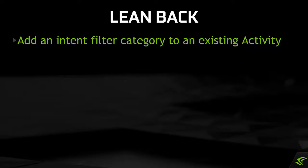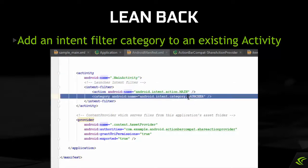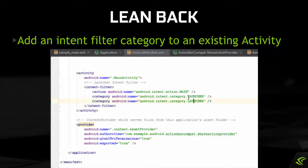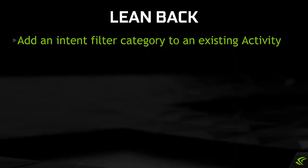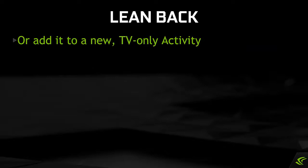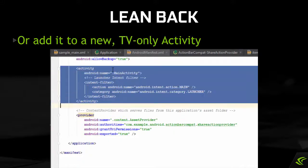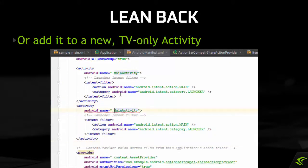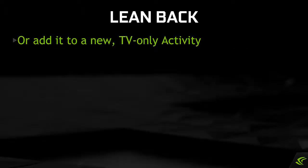The main modification required is to ensure that some activity in your app handles the Leanback Launcher intent. This can be done in one of two ways: either by adding an intent filter to handle that intent in an existing activity — likely the same one that handles the tablet and phone launcher intent you already have — or by creating a new TV-specific activity that handles the Leanback Launcher intent only. While more work, the approach of having a separate activity for Android TV does make it much easier to customize the experience. The path taken is up to each app, but some activity has to handle the Leanback Launcher intent.